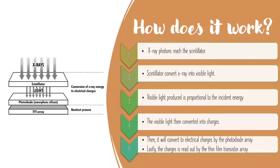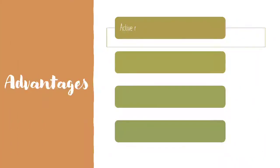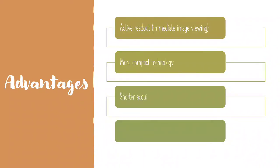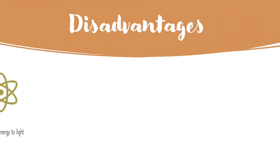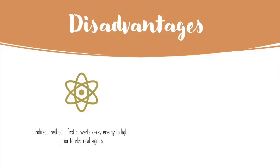There are a few advantages when it comes to indirect flat panel systems. The first one is that it has active readout, meaning the image viewing is immediate. It also uses more compact technology, has a shorter acquisition time, and uses discrete detector elements.